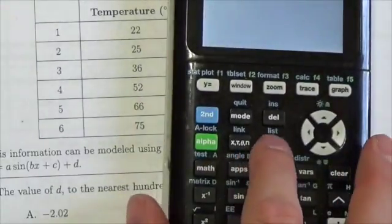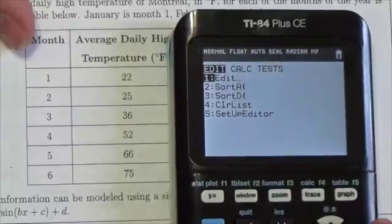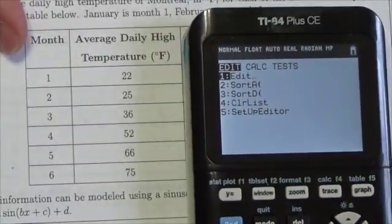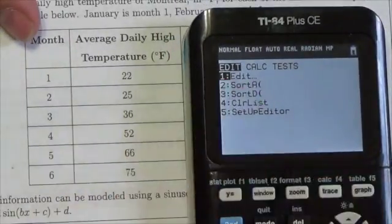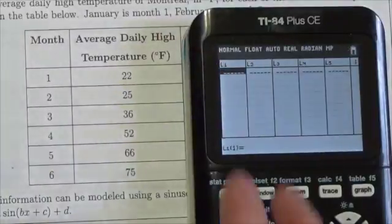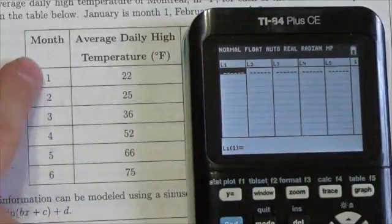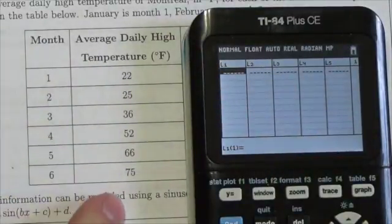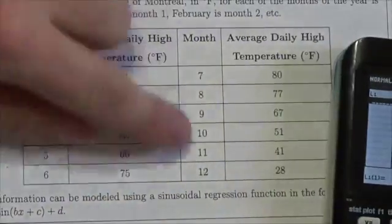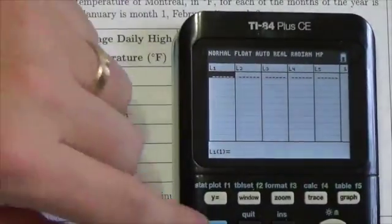Now what I'm going to do is press my stat button, because I have to enter this information, and this really is a statistical calculation. We'll press enter on edit, and that opens up our two lists here. So list one is going to be month, list two is going to be average daily temperature. I'm going down to 12 months, which makes sense.